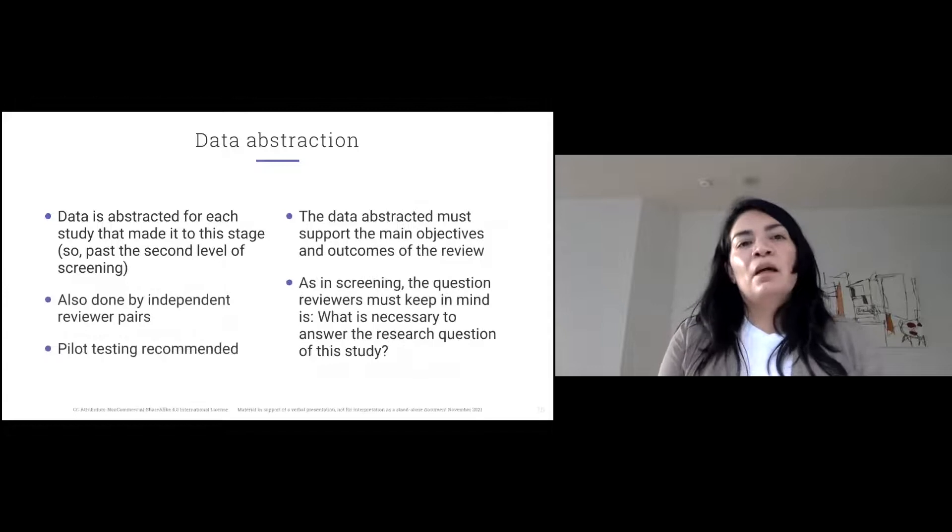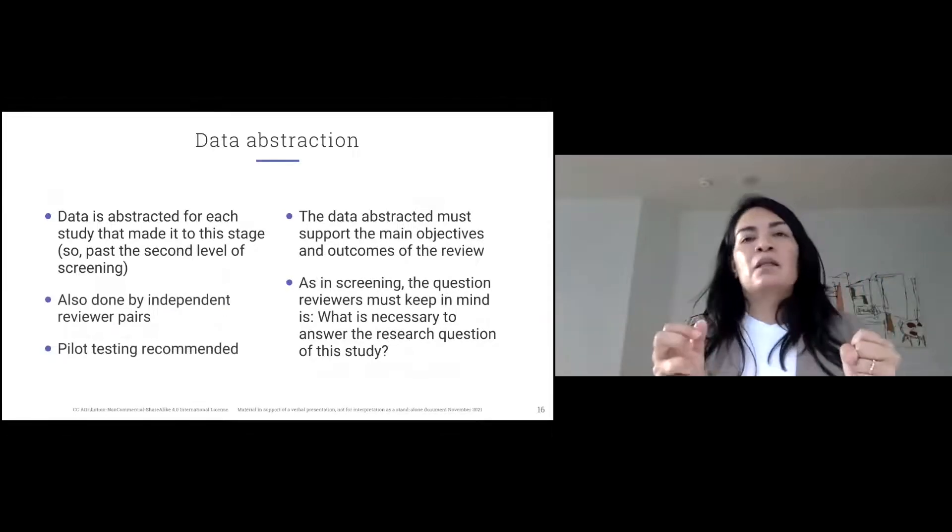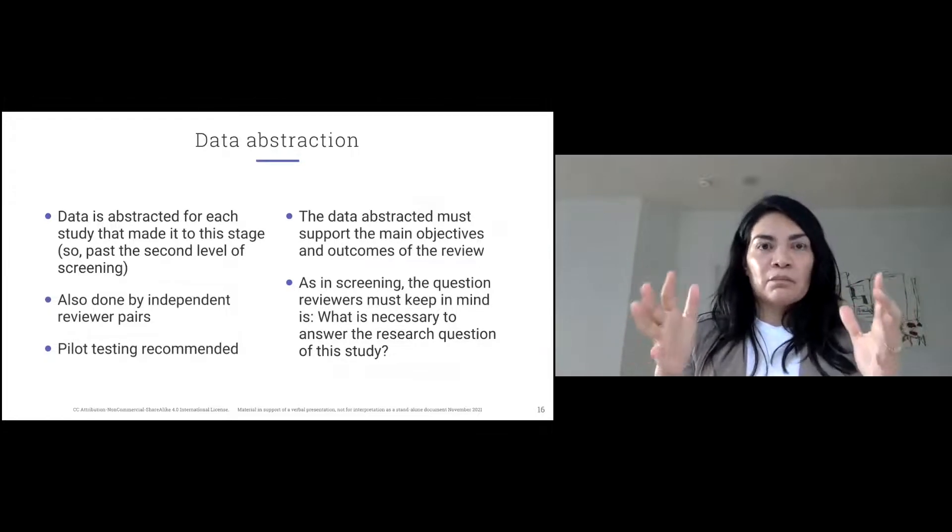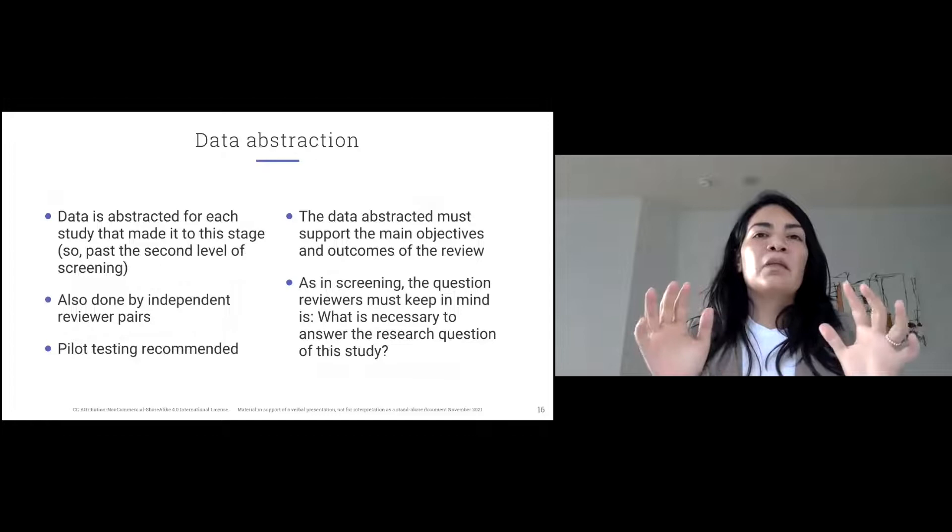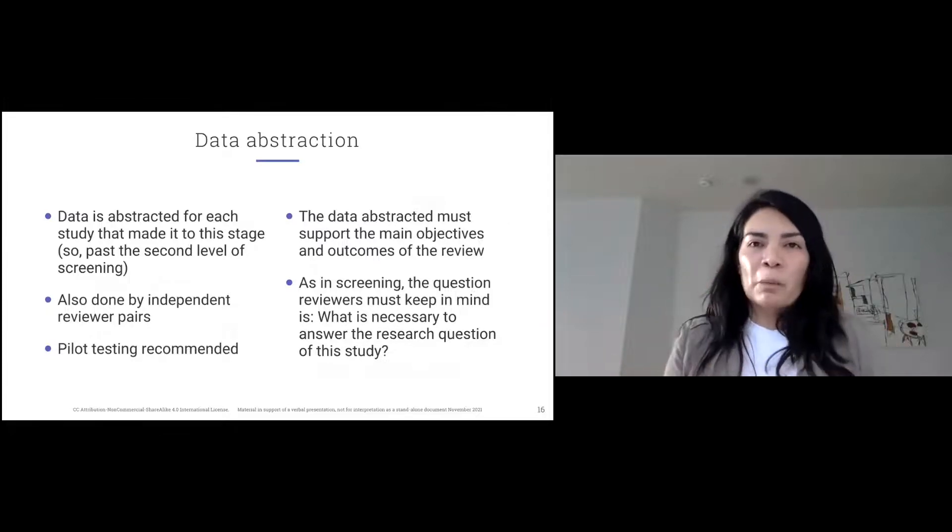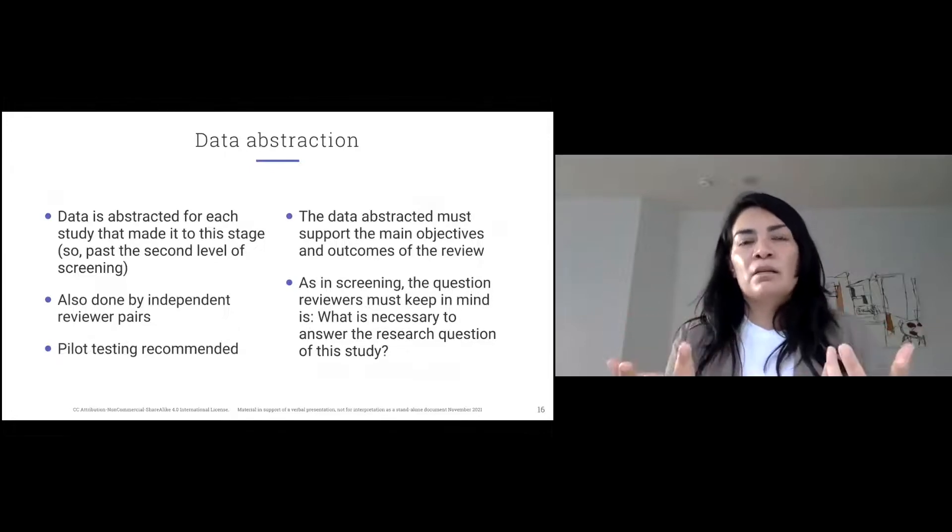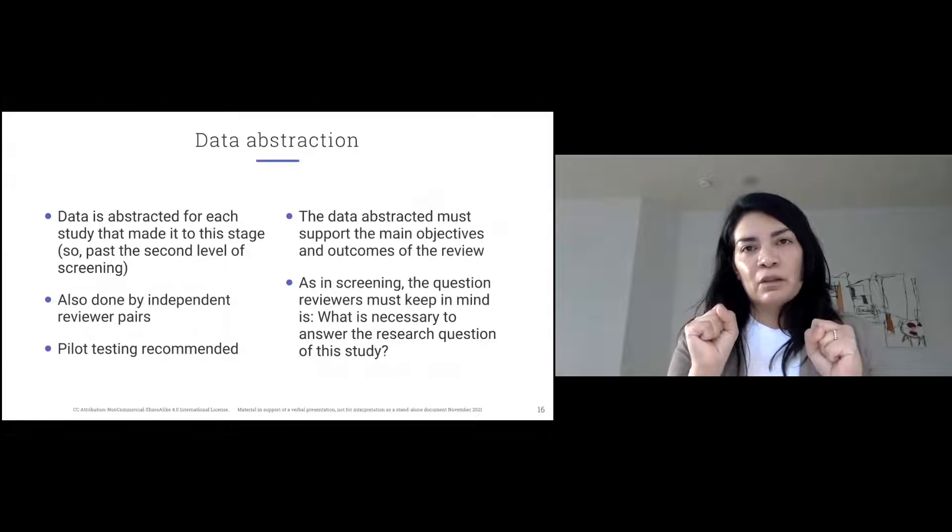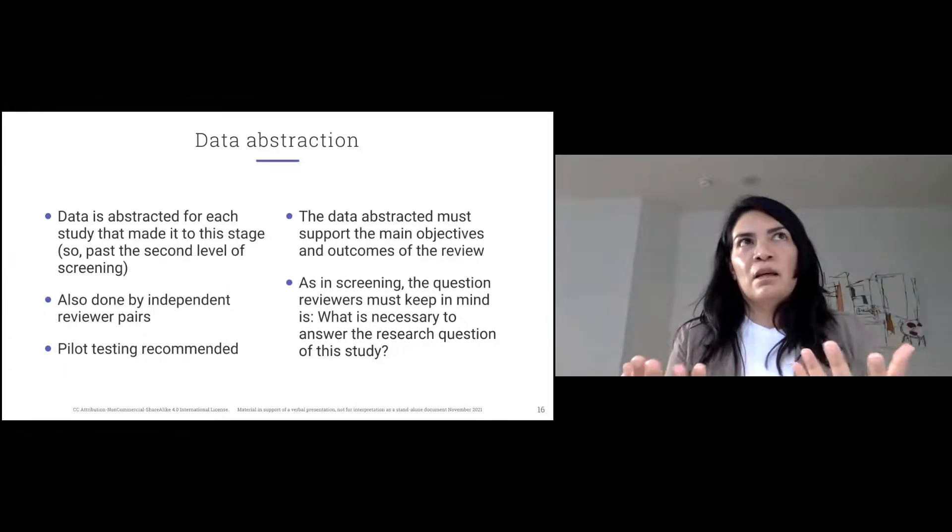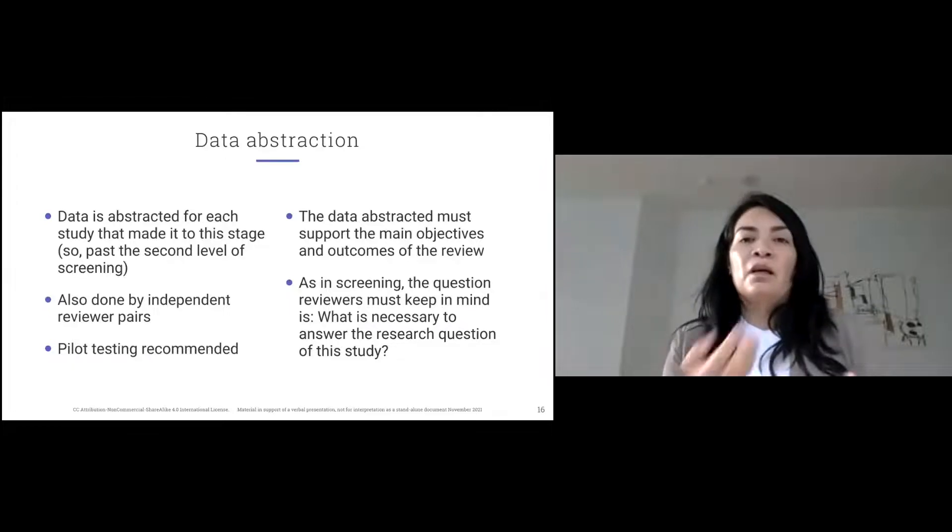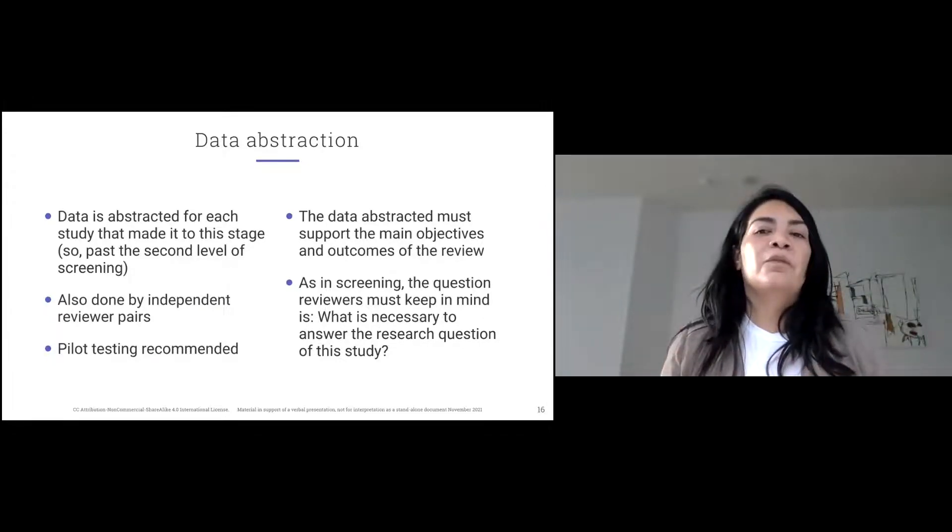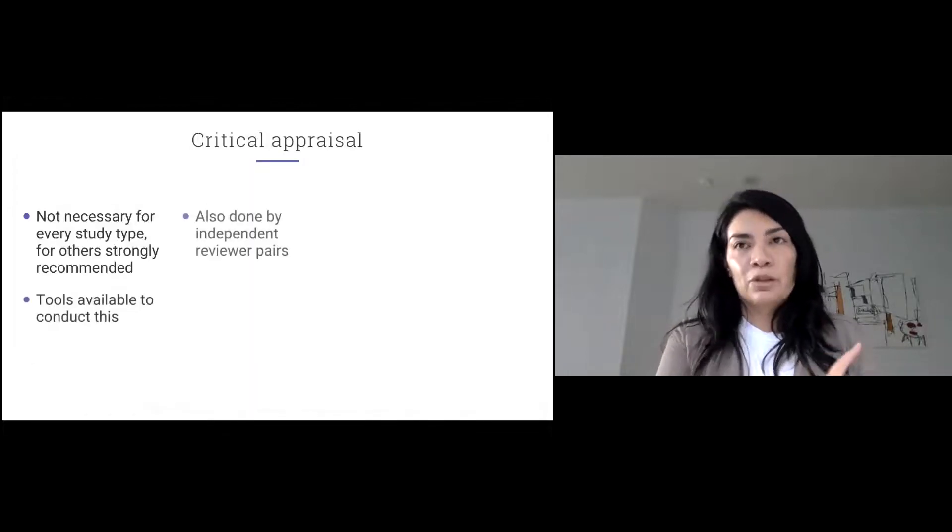Data abstraction is also done by independent reviewer pairs. Based on predefined data or reason, you decide what you're going to abstract. There's some things that are non-negotiable, like title, year of publication, country of publication, author. But then what else? What is it that you need to gather from these articles in order for you to paint your story when you synthesize the data? This is also based on your eligibility criteria. What is necessary for me to abstract from these articles in order to answer the research question of this study?